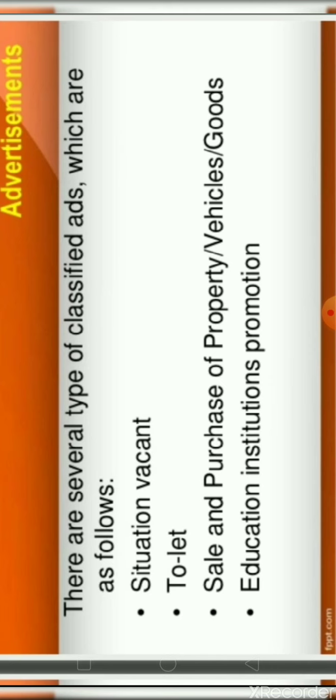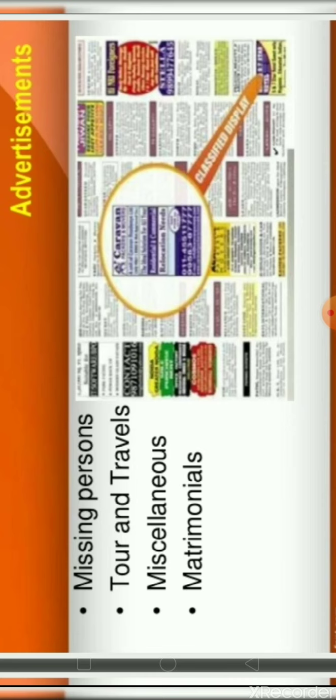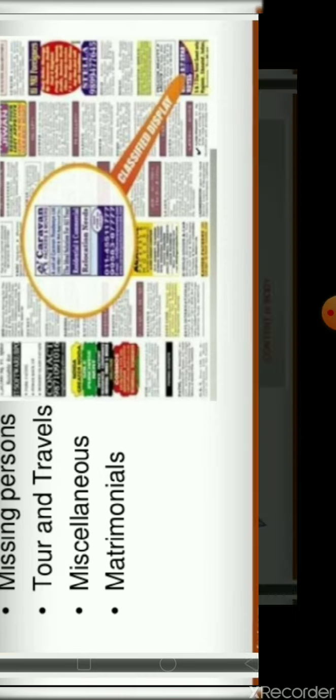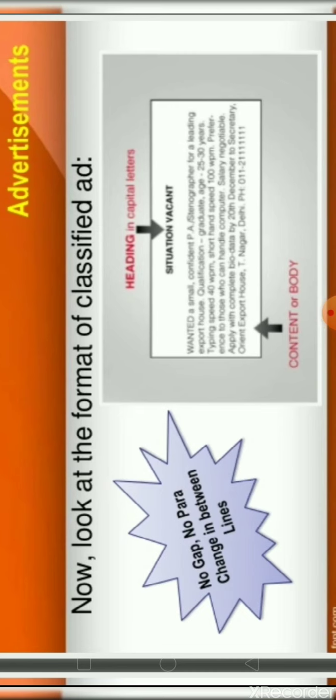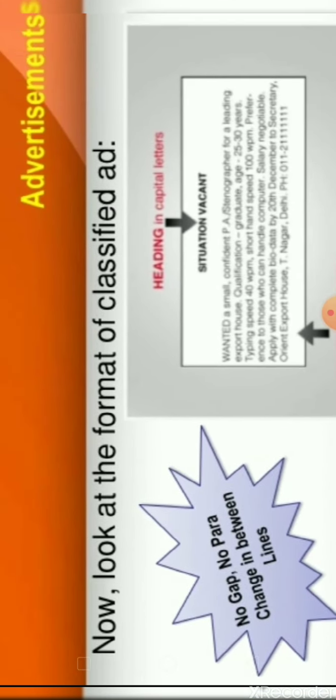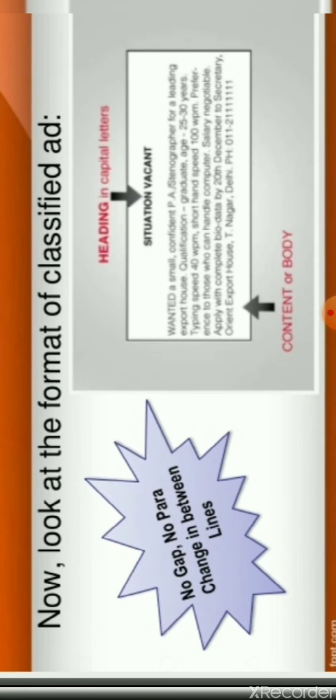The types of classified ads include: situation vacant, to let, sale and purchase of property, vehicles, goods, education, institutions, promotion, missing persons, tools and travel, miscellaneous, and matrimonials. Now, looking at the format of classified advertisements — the heading is always in capital letters. For example, for a situation vacant ad, there is no paragraph change in between lines.